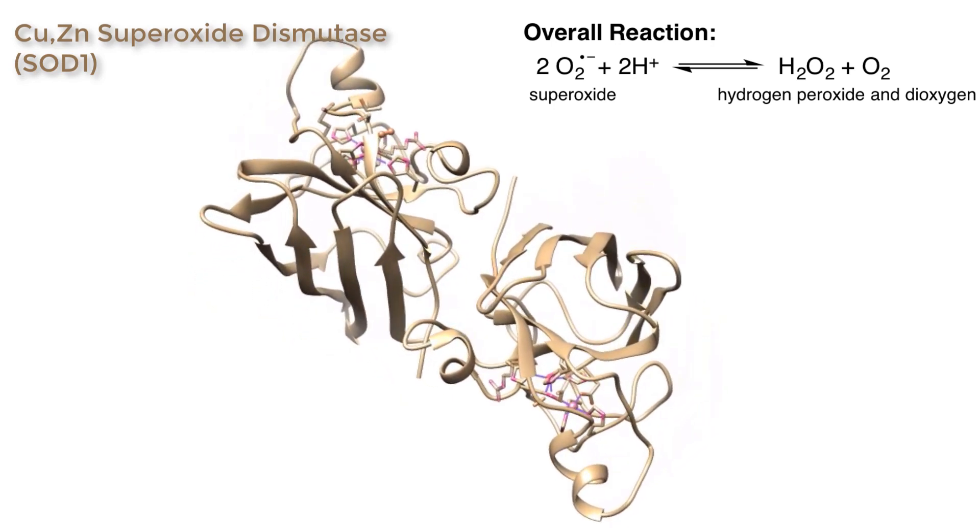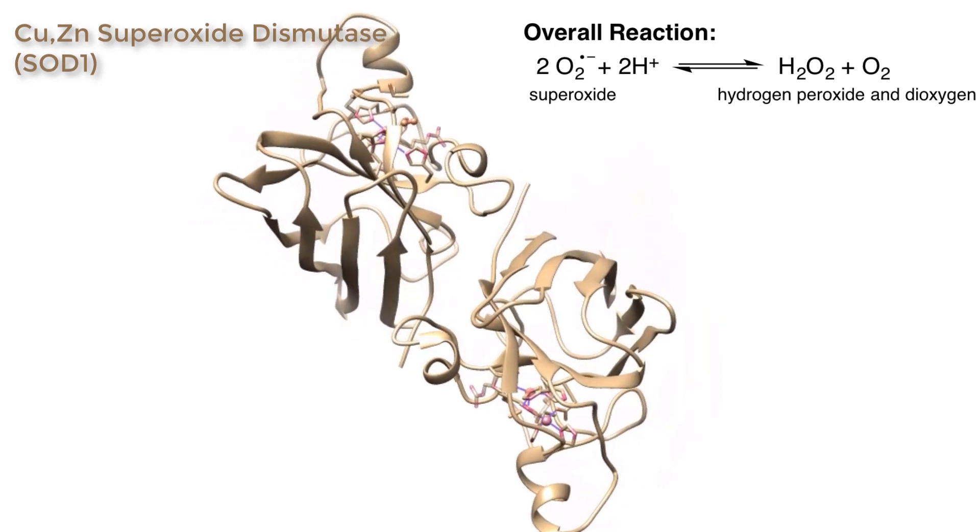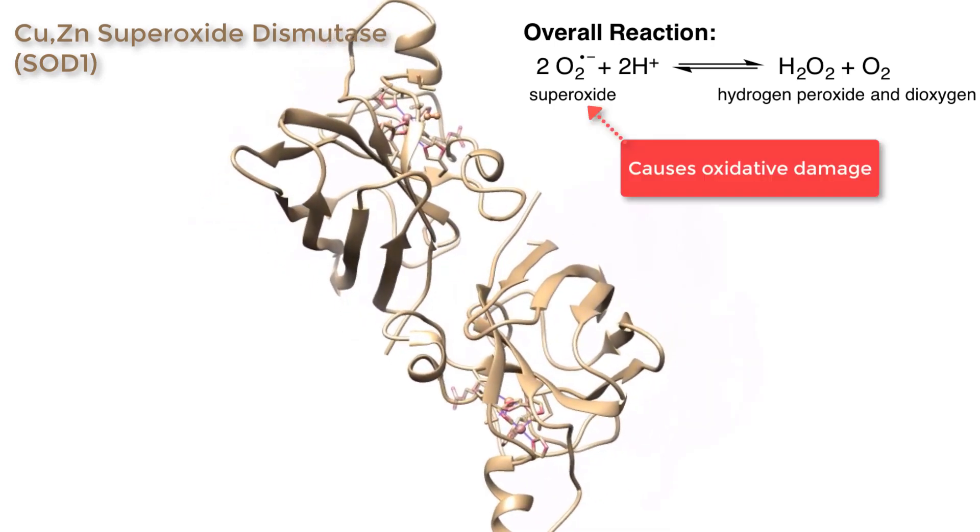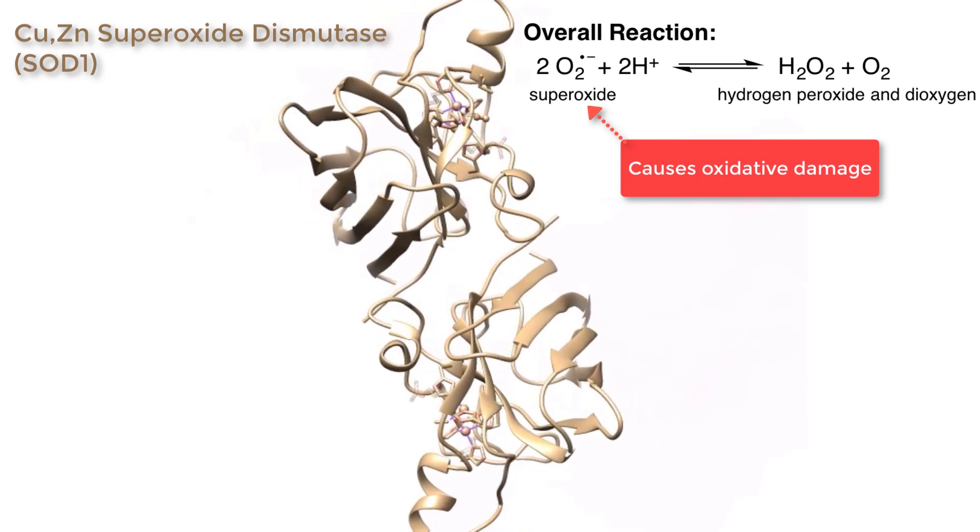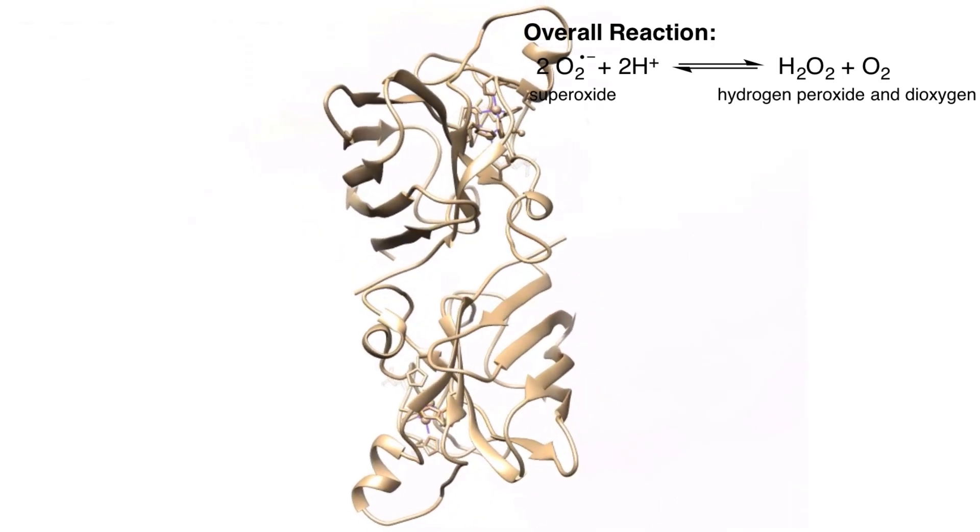When superoxide is protonated it can destroy DNA and enzymes in the body through oxidative damage. The copper ion at the enzyme active site catalyzes the reaction while the zinc ion is present for support and stabilization.